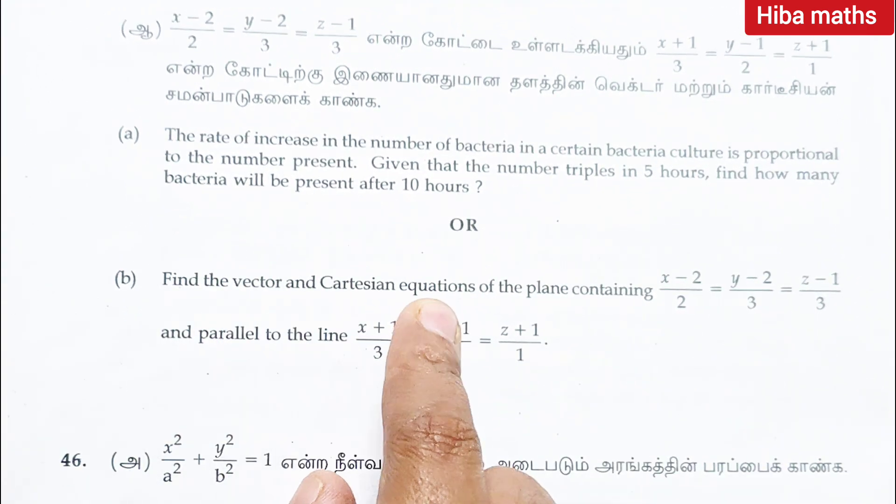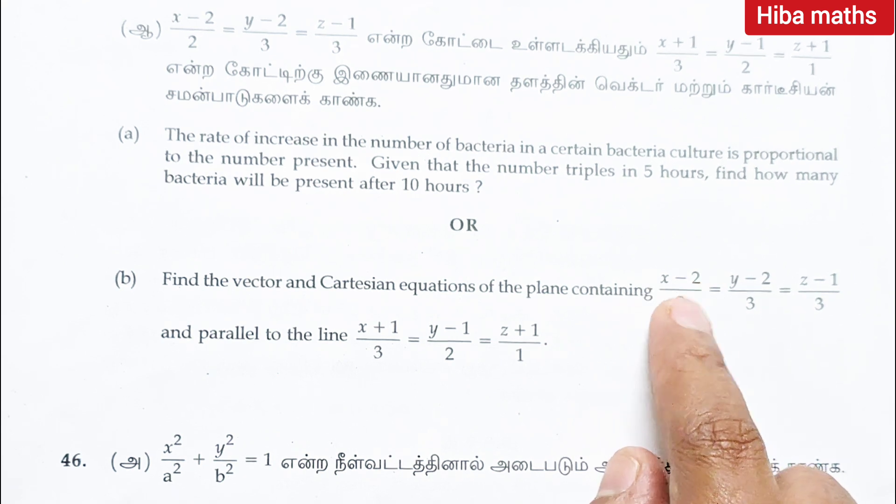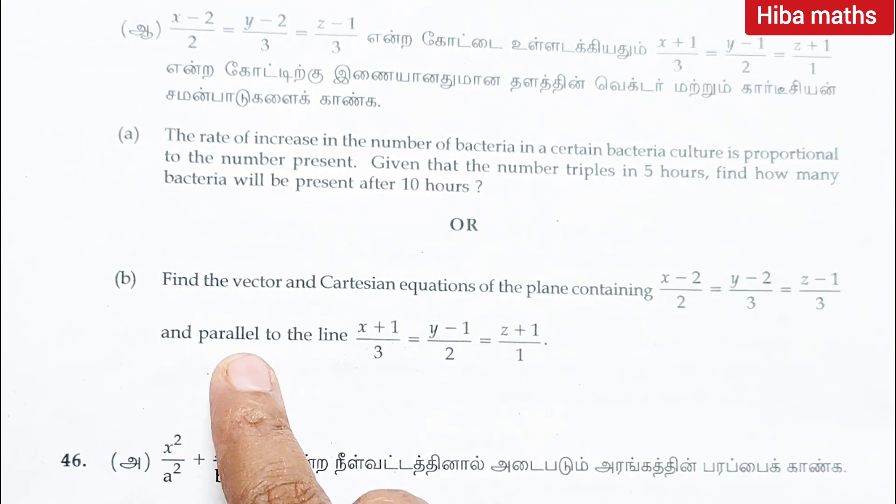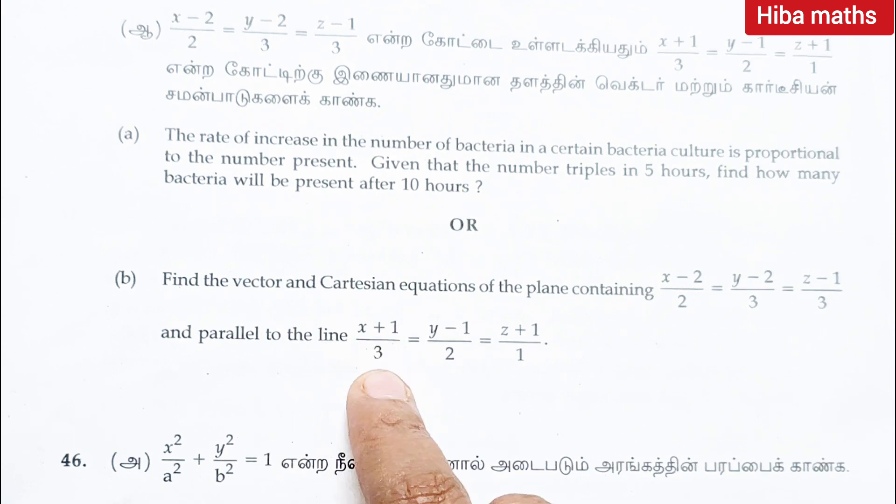Question 48: find the vector and cartesian equation of the plane containing x minus 2 by 2, y minus 2 by 3, z minus 1 by 3 and parallel to the line x plus 1 by 3, y minus 1 by 2, z plus 1 by 1.